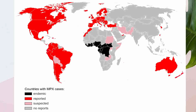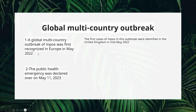In 2022, monkeypox spread all over the world, though thankfully it is not endemic globally, and hopefully we can get rid of this virus. On the map, the endemic areas are shown in black in Africa. Cases were reported in Canada, North America, South America, all of Europe, the UK, Morocco, and Australia. Pink countries are suspected cases, and there may be additional unreported cases. The global multi-country outbreak in 2022 spanned Europe and the UK, and the public health emergency was declared in May 2023.